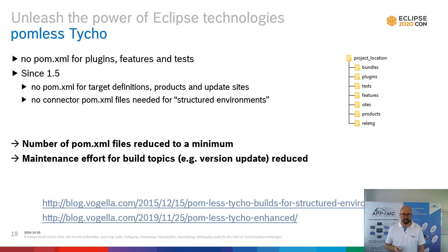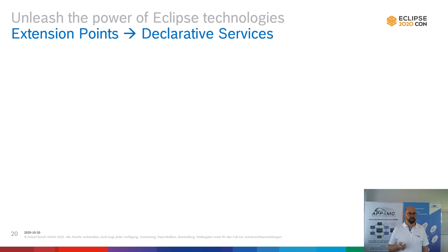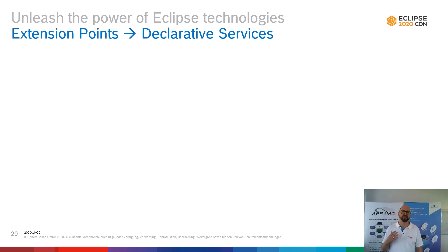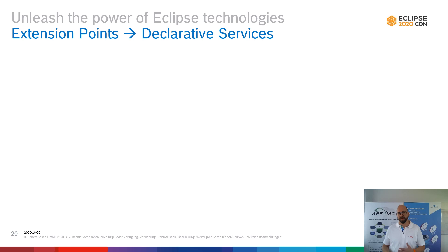I have also written two blog posts about Pomless Tycho, so if you're interested in finding out more, the links are here. Now, one of my favorite topics: extension points to declarative services. Extension points are actually not bad and they're not deprecated as some people might say — they've existed for a very long time in Eclipse. But if you look more closely at the design, extension points are similar to a service-oriented design, though in my opinion they are not state of the art anymore.